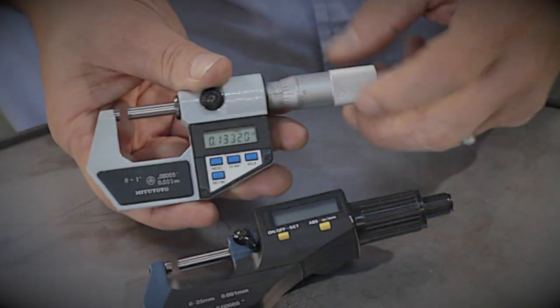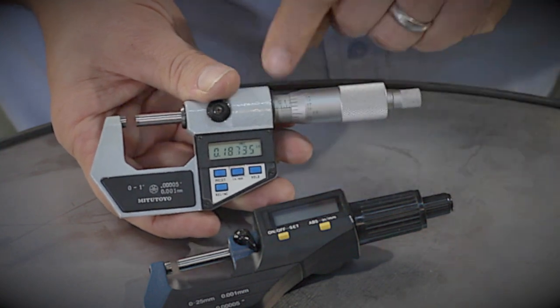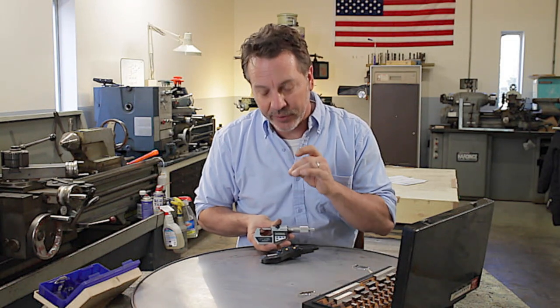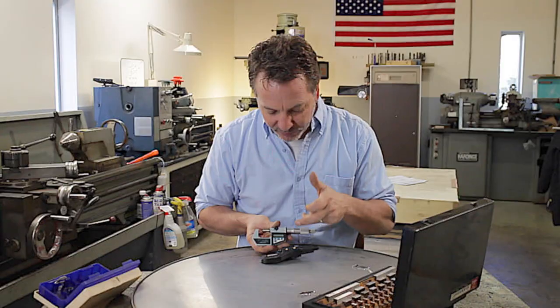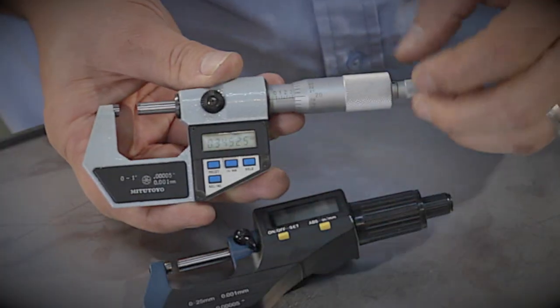One of the things that the Mitutoyo has is on the barrel here, we can also take measurements. And if the battery dies, we can still rely on this to take care of us. But it doesn't have an extra vernier scale on here to take it down to ten thousandths. It's only good for one thousandths.